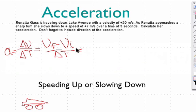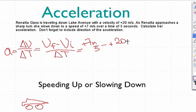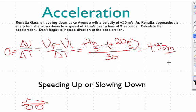Here's a word problem: Renata is traveling at 20 meters per second in the positive direction. She slows down to 7 meters per second, and it takes her 3 seconds. Her acceleration is v-final minus v-initial over time: positive 7 minus positive 20, divided by 3 seconds, which equals negative 4.33 meters per second squared. This is a negative acceleration. She's traveling in the positive direction with negative acceleration, so she must be slowing down — and indeed she is.